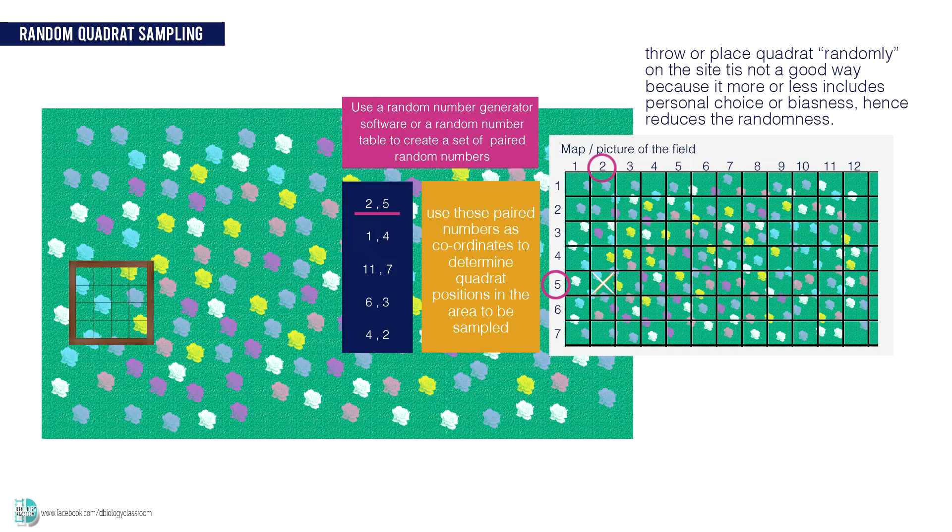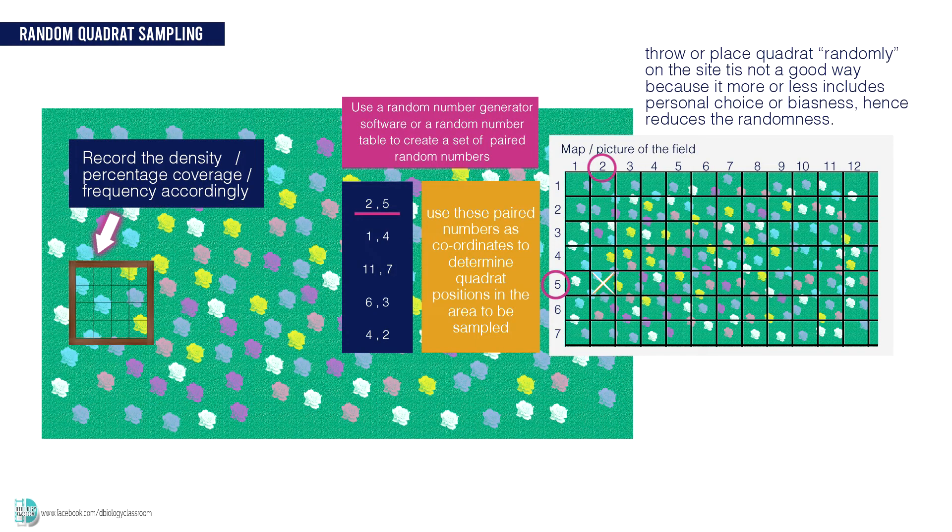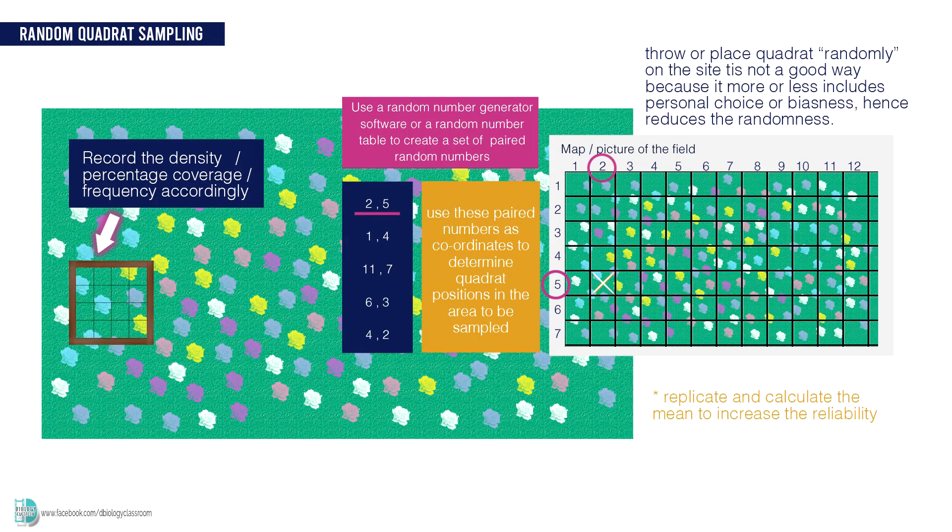Depending on what data you want to collect, record the density or percentage coverage or frequency accordingly. Repeat the process for multiple times using other random numbers to obtain the mean. The number of replicates depends on the size of the area. The more quadrats you use, the more reliable the data is.